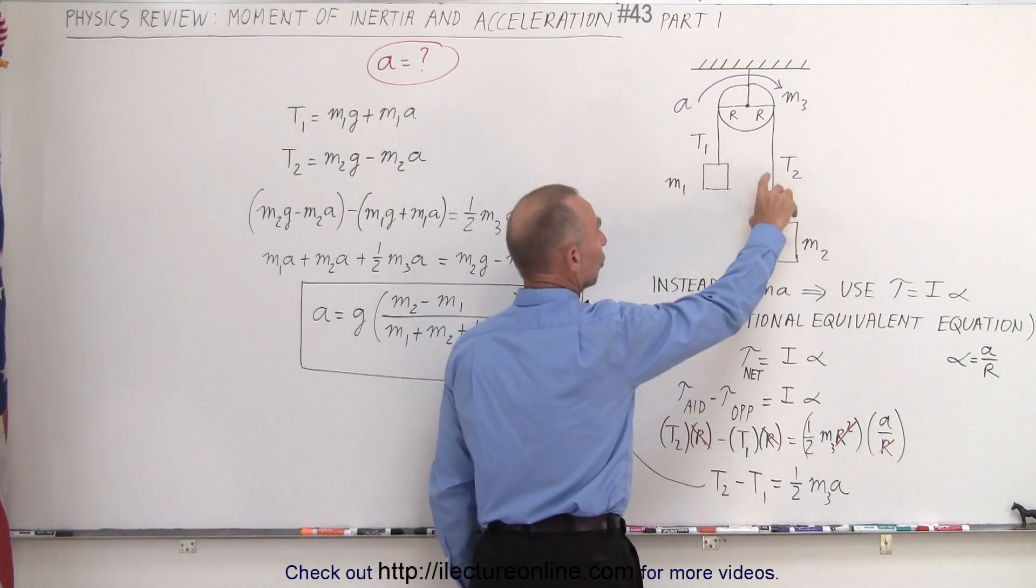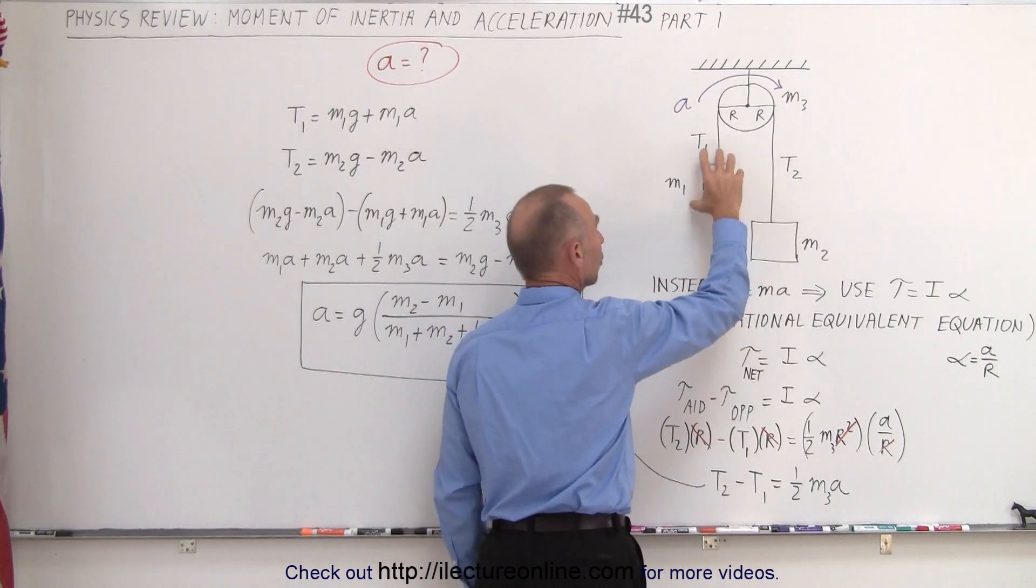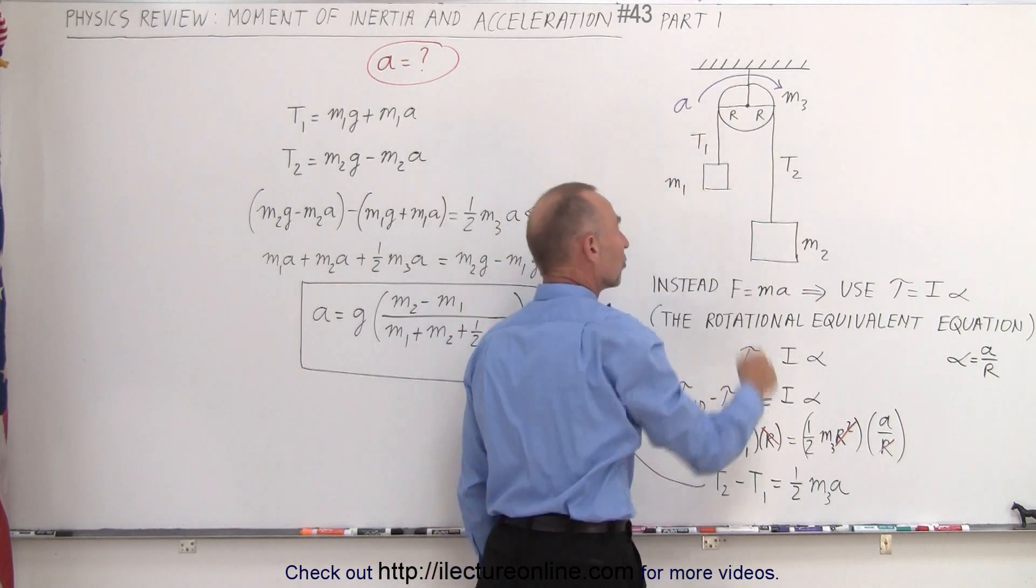The torque aiding acceleration is the torque caused by the big mass here, trying to accelerate it in this direction. The opposing torque will be the torque caused by this mass in the opposite direction.